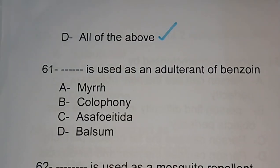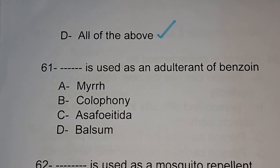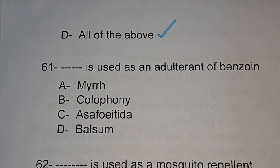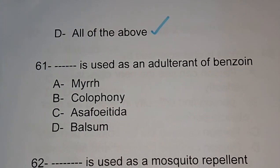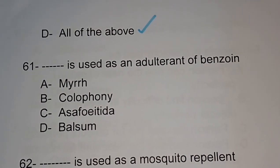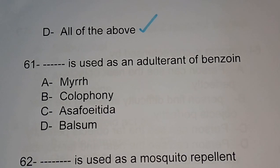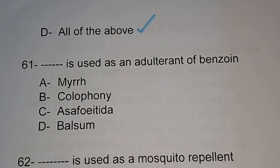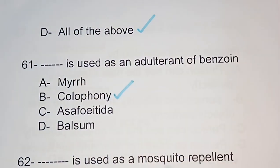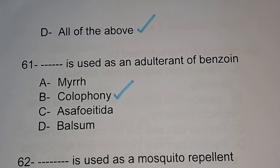Question number 61: which substance is used as an adulterant of benzoin? Options are myrrh, colophony, asafoetida, balsam. The correct answer is option B, colophony — colophony is used as an adulterant of benzoin.